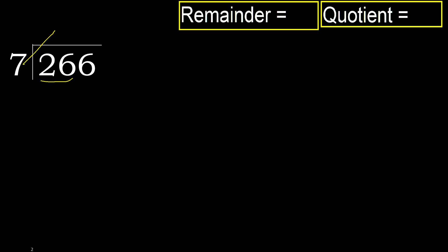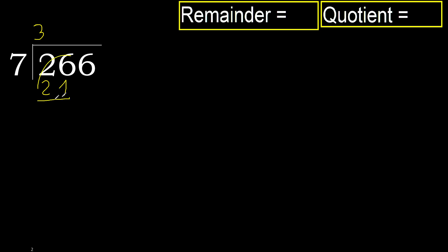7 multiplied by which number is nearest to 26 but not greater? 7 multiplied by 4 is 28, which is greater. 7 multiplied by 3 is 21, which is not greater. Ok, subtract — remainder is 5.